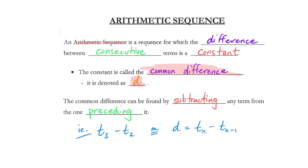For us to find the common difference, all we need to do is subtract two consecutive terms, and we do it in a very important way. We take any term and subtract the one that precedes it — the one that comes before it. In examples down in the blue, if we were subtracting those two terms to find D, we would take a term and subtract the one that comes before it. So as an example, we would take term three and subtract term two. In the most generic case, to find D we would take term N and subtract term N minus one.